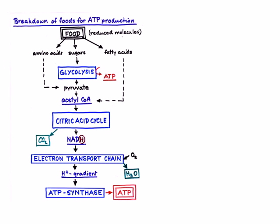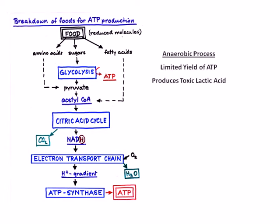The first part of the production process is known as glycolysis. It essentially entails the breaking down of glycogen and ultimately yields a limited amount of ATP. This process reveals a relatively toxic waste product, lactic acid, and does not require the use of oxygen — it is referred to as anaerobic fermentation.